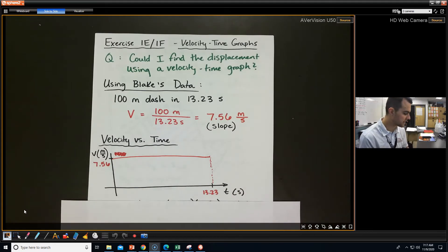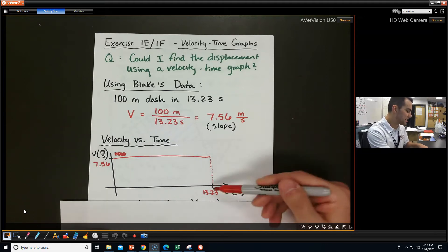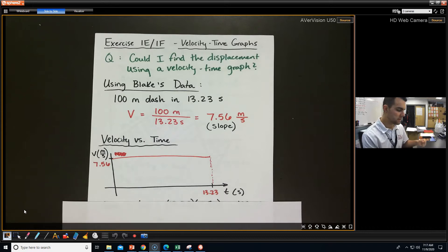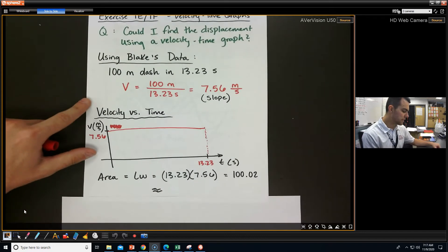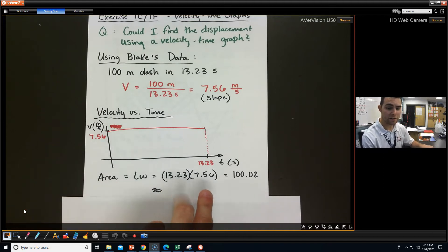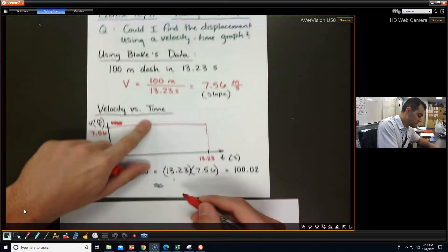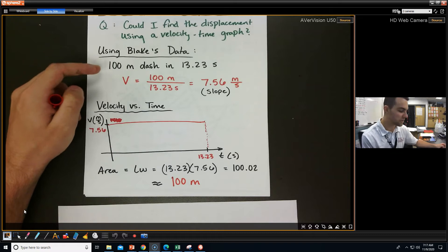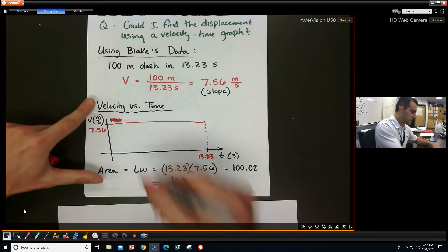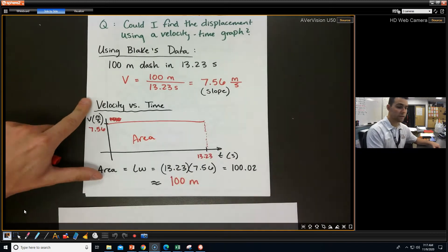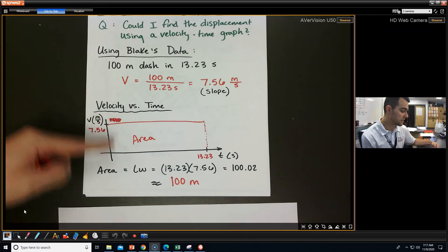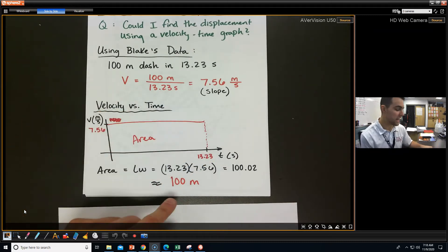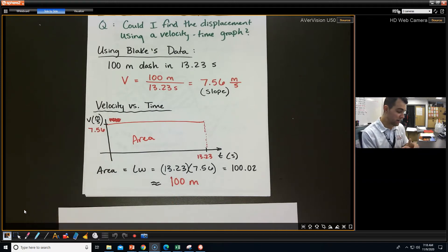If you look at that, we've got a pretty-looking rectangle right there. We have a length of 13.23 seconds and a width of 7.56 meters per second. So why am I talking about length and width? Well, if we take the area of this and multiply those values, we end up getting 100.02, which is approximately 100 meters — which is his displacement, his total displacement. And that's actually a feature of these velocity time graphs. If you take the area from this line to the bottom of the x-axis, you are going to end up getting your displacement back.